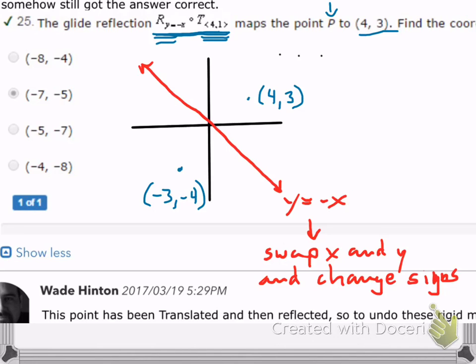Now, as a side note here, if we were reflecting across y equals x, then you just swap them. But when you have the negative sign involved, y equals negative x, you're going to swap the x and y and change their signs.